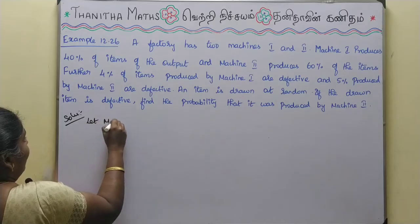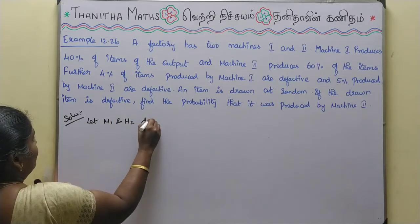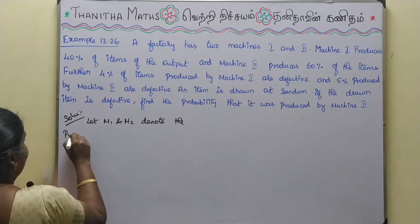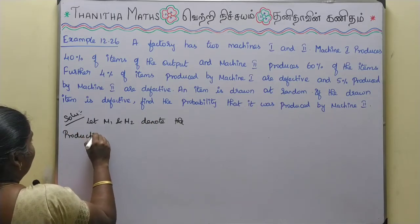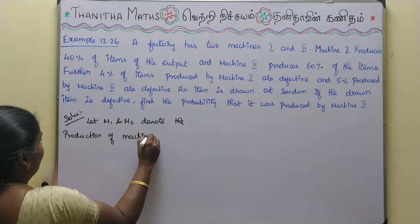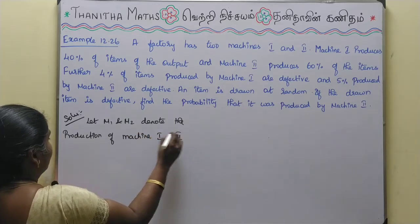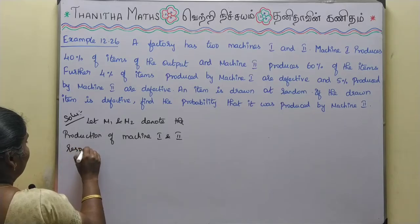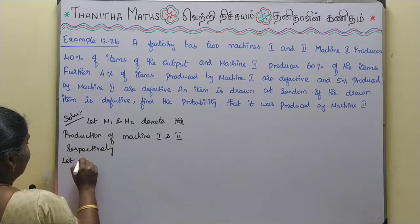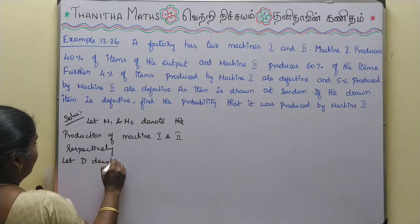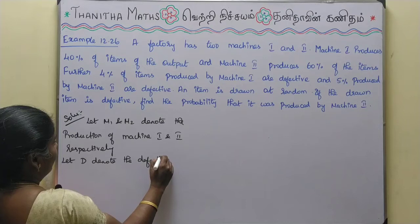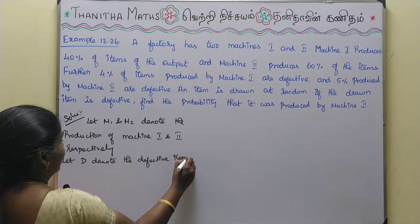Let M1 and M2 denote the production of machine 1 and machine 2 respectively. Let D denote the defective item — that is, the event of getting a defective item.